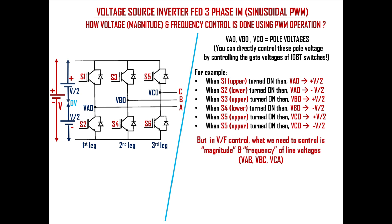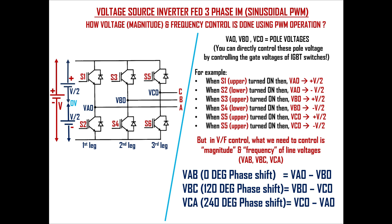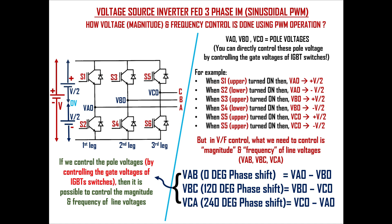In V/F control, what we need to control is the magnitude and frequency of line voltages — that is VAB, VBC, and VCA. We can write VAB as VA0 minus VB0, VBC as VB0 minus VC0, and VCA as VC0 minus VA0. We need to keep in mind that the three line voltages should have 120 degree phase shift. VBC will have 120 degree phase shift with respect to VAB, and VCA should have 240 degree phase shift with respect to VAB. By controlling the pole voltages through the IGBT gate voltages, it is possible to control the magnitude and frequency of line voltages.